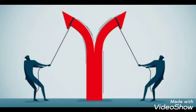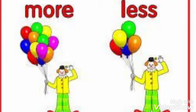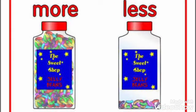Then more or less. See these two trees — more fruits are there in the number one tree, and in the second tree there is less fruit. Here are also more balloons in the first man's hand, and in the second man's hand there are less balloons.